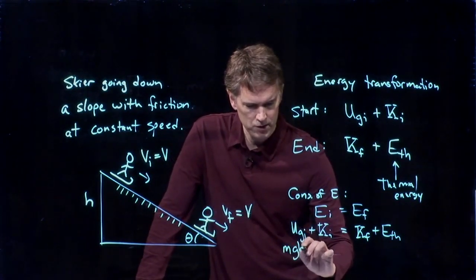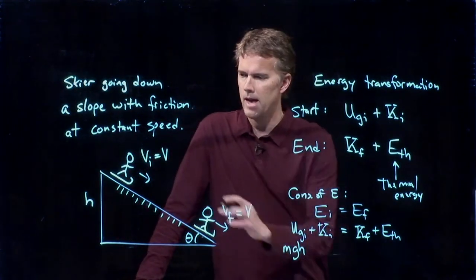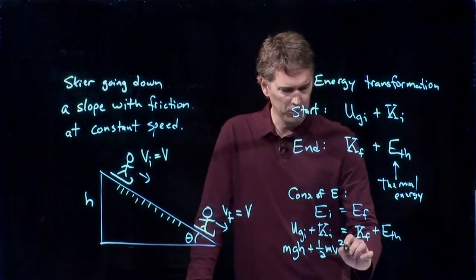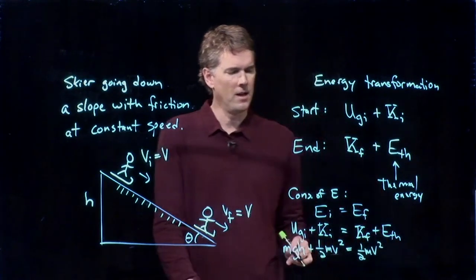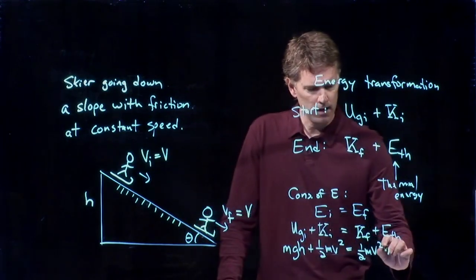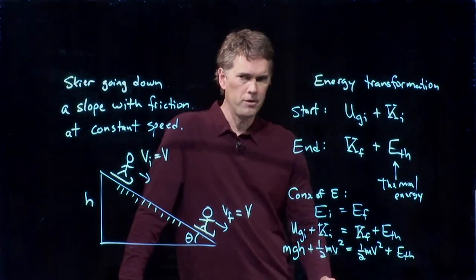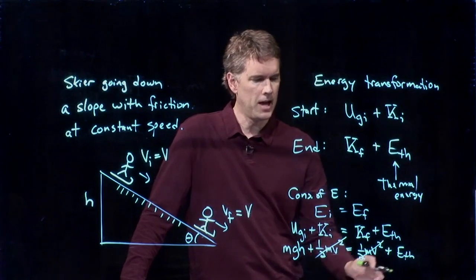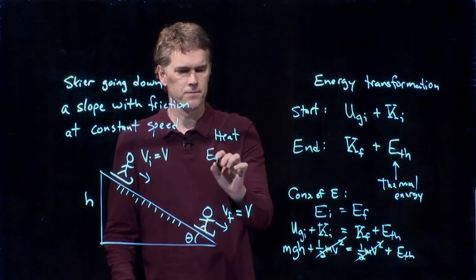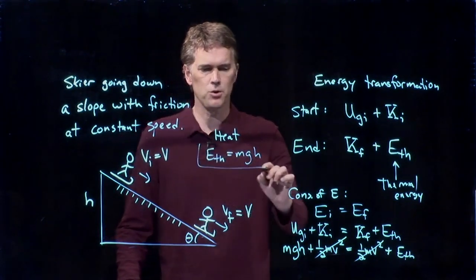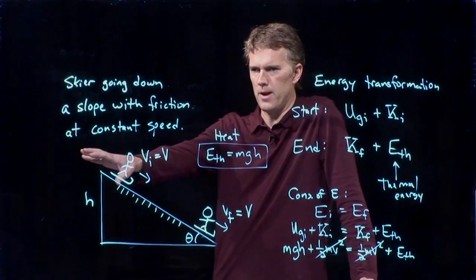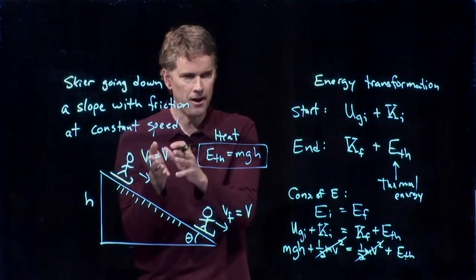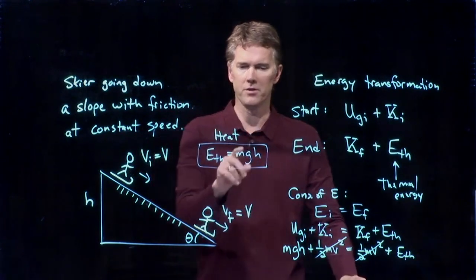Ugi, in this case, is just mgh. How high did you start? You started at height h. That's your gravitational potential energy. At that height, we were moving at speed V. So this is one half mv squared. Down at the bottom, we're still moving at speed V. So this is one half mv squared. And we have generated heat. Energy thermal. So in fact, in this problem, look what happens. We can cross out the one half mv squared from both sides. I subtract those. And how much heat have I generated? It's just how much potential energy I started from. All of the potential energy that you had initially went into heat. It heated up the snow. It heated up the skis. It heated up the air as you pushed it out of the way.